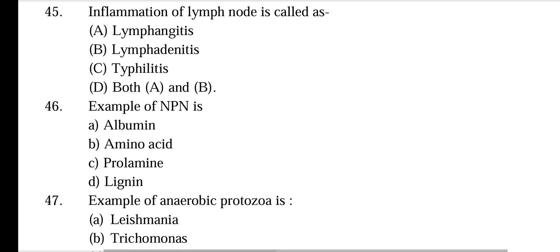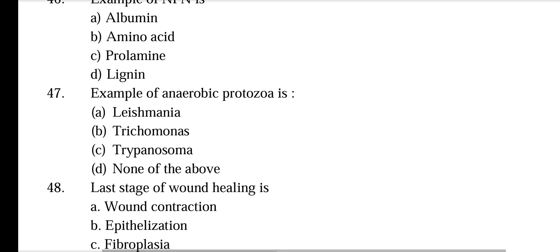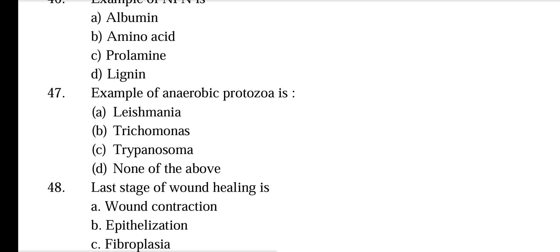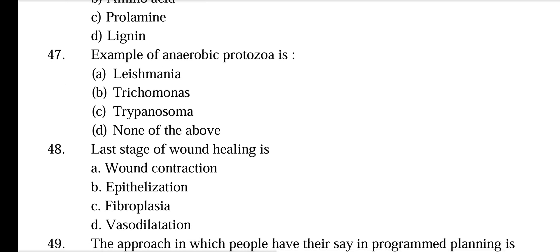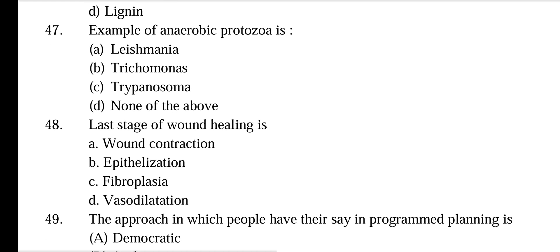Example of NPN (Non-Protein Nitrogen) is — options: Albumin, Amino Acid, Prolamine, Lignin. The answer is Amino Acid. Example of anaerobic protozoa is — options: Leishmania, Trichomonas, Trypanosoma, Monocercomonas. The answer is Trichomonas.